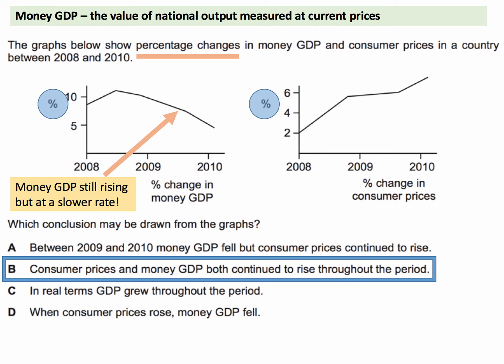We can see on the left hand side that the growth of money GDP was positive throughout the period. From the middle of 2008 onwards, the growth of money GDP was slowing down — the economy was heading towards a recession. But crucially, money GDP was still going up, still rising, albeit at a slower rate. There was a deceleration in the rate of growth of money GDP, but it was still increasing.